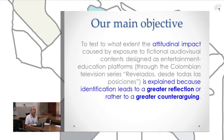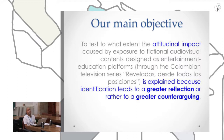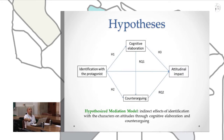So, my objective in this research is to determine to what extent the attitudinal impact can be explained because identification leads to greater reflection, or rather leads to reduced counter-arguing. Counter-arguing is a critical processing of the message. This is our mediation model, in which you can see in the slide two mediating variables — cognitive elaboration and counter-arguing — both connected in sequence. The independent variable is identification with protagonists, and the dependent variable is the attitudinal measure.